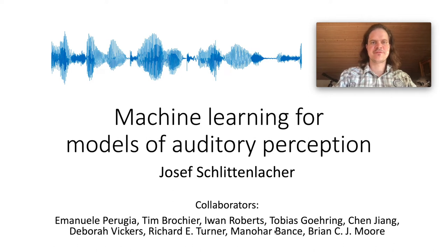The first artificial neural network was designed to serve as a bridge between biophysics and psychology. Frank Rosenblatt called it the perceptron. Nowadays, machine learning can do much more than simple neural networks. In this talk, I will show you three different strategies to use machine learning for hearing models: machine learning instead of a hearing model, machine learning for a hearing model, and machine learning as a hearing model.